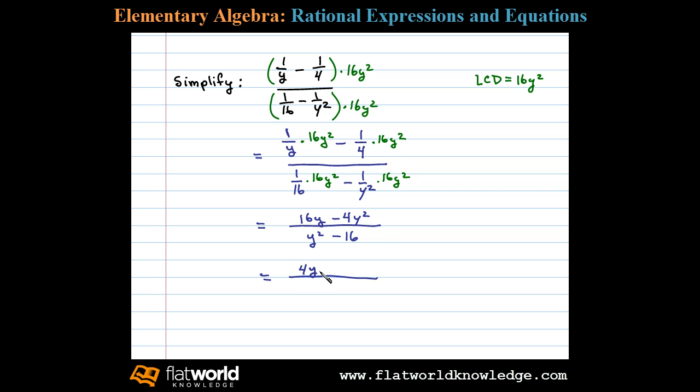In the numerator notice 4 y is the GCF. Factoring out 4 y we'll be left with 4 minus y.